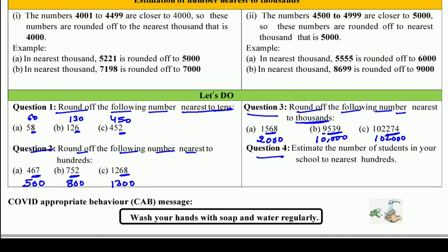Q4: Estimate the number of students in your school nearest to 100. आपने अपने स्कूल में जितने बच्चे हैं उनका estimate लगाकर nearest 100 में rounded off करना है। For example, किसी स्कूल में 496 students हैं। 100 में करना है तो 2 digits देखी — 96 है, 50 से ज़्यादा है, तो 500. ऐसे ही आपको अपने स्कूल के बच्चों का estimation लगाकर 100 में rounded off करना है।